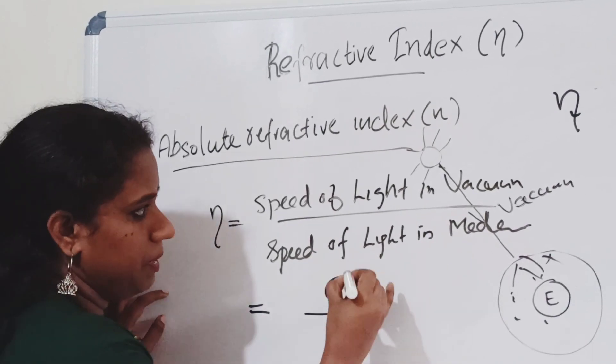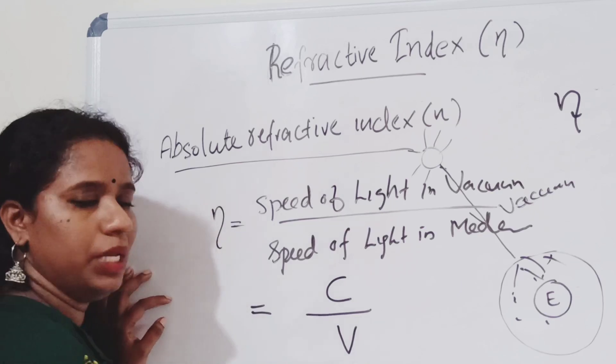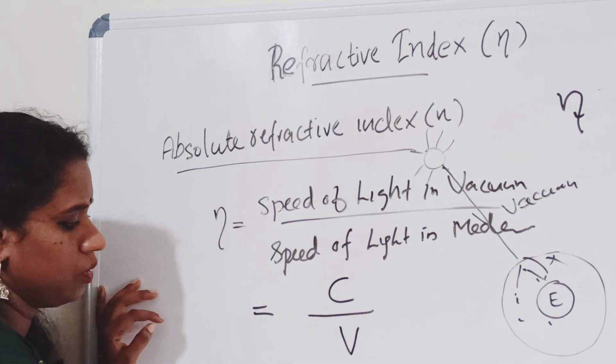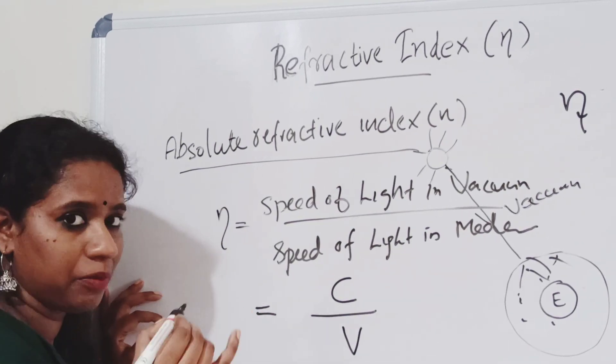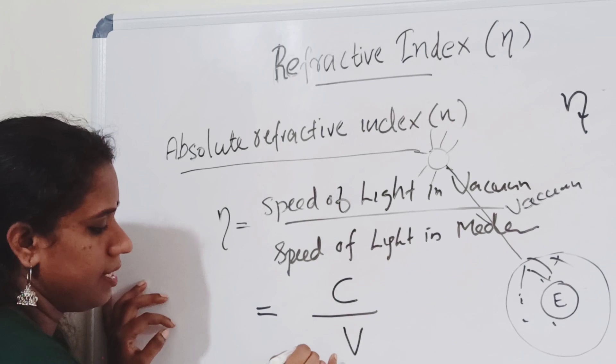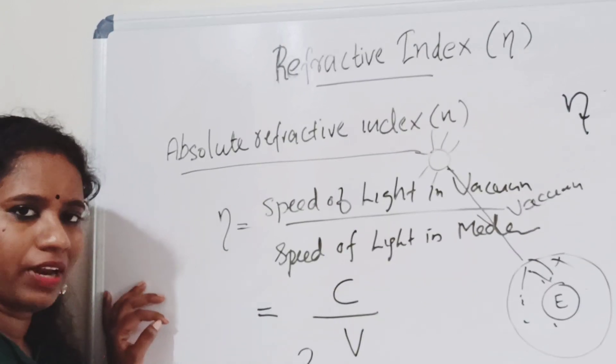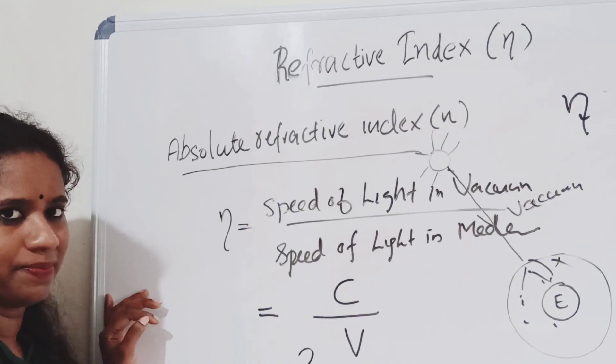The speed of light in vacuum is represented as C, and the speed of light in the medium is represented as V. So, is there any unit for the refractive index?